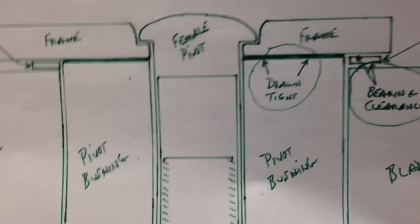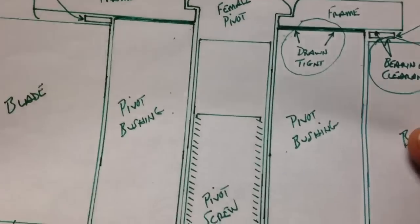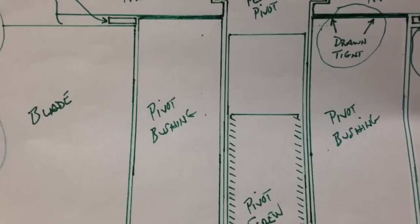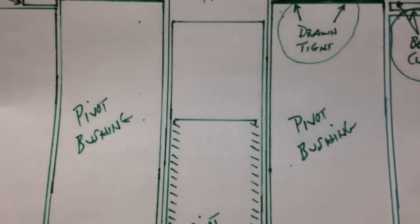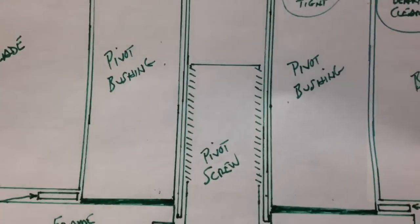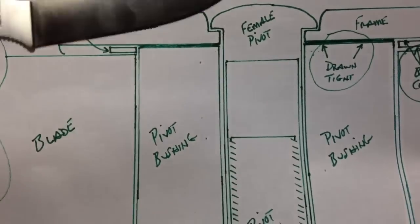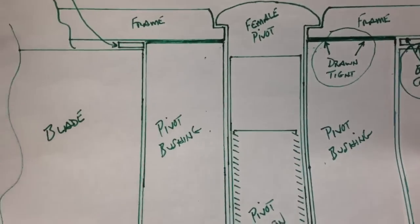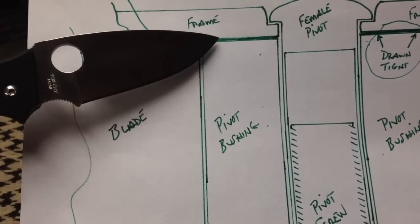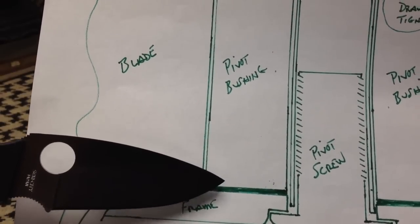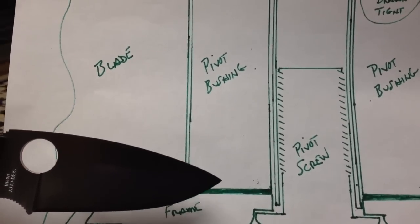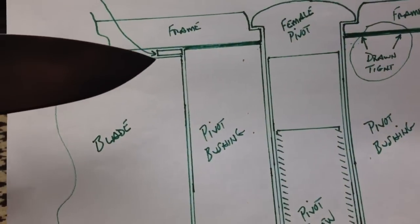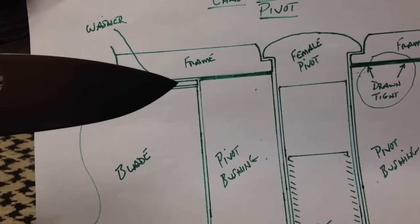Now instead of just having a pivot screw of blade and washers we've got these large slabs on either side of the pivot which essentially when you look at it in one piece instead of this cross section it's a big bushing. The pivot actually is precisely slip fit into this bushing.